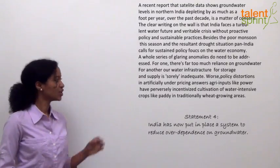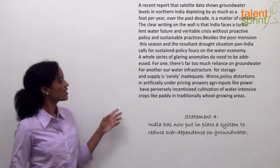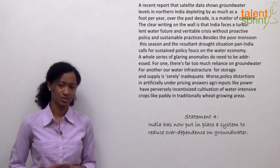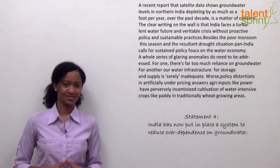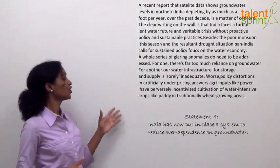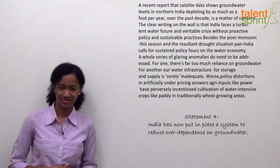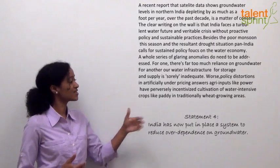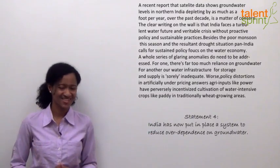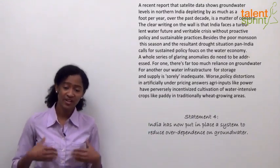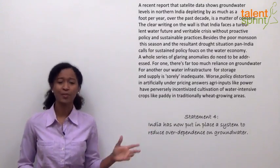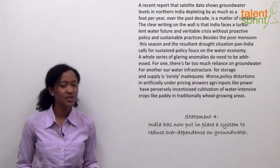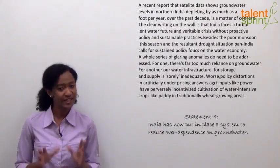Statement 4 says: 'India has now put in place a system to reduce over-dependence on groundwater.' The passage says there is far too much reliance on groundwater — contradicting this statement directly. The statement claims India has reduced dependence, but the passage says the opposite. Since the facts in the passage contradict this statement, it falls under option 5 — definitely false.